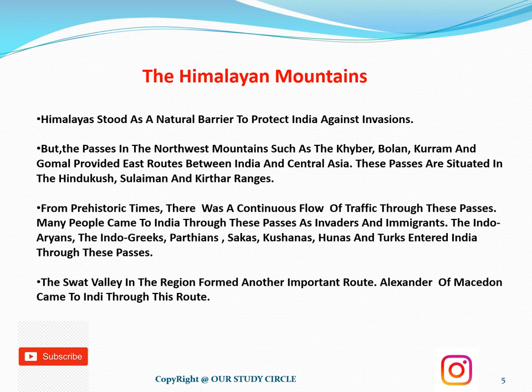Many people came to India through these passes as invaders and immigrants — the Indo-Aryans, Indo-Greeks, Parthians, Shakas, Kushanas, Huns, and Turks entered India through these passages. The Swat Valley in the region formed another important route. Alexander of Macedonia came to India through this route. We will discuss further in later lectures how he fought the great Indian ruler Porus, who stood against Alexander without fear.